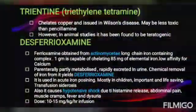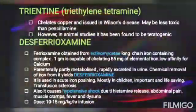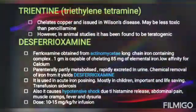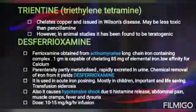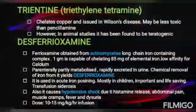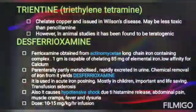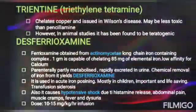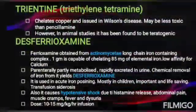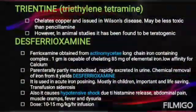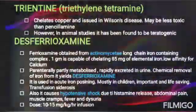The next drug is desferrioxamine. Ferrioxamine is obtained from actinomycetes, a long-chain iron-containing complex. One gram is capable of chelating 85 mg of elemental iron. However, it has low affinity for calcium. It is partly metabolized and rapidly excreted in urine. Chemical removal of iron from it yields desferrioxamine. It is used in acute iron poisoning, mostly in children, and is important and life-saving. It causes hypotensive shock due to histamine release, abdominal pain, muscle cramps, fever, and dysuria. The dosage is 10 to 15 mg/kg by hourly infusion.